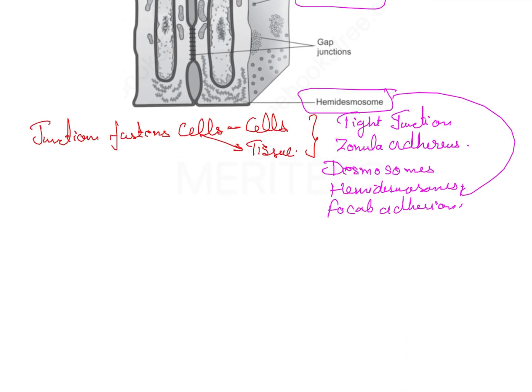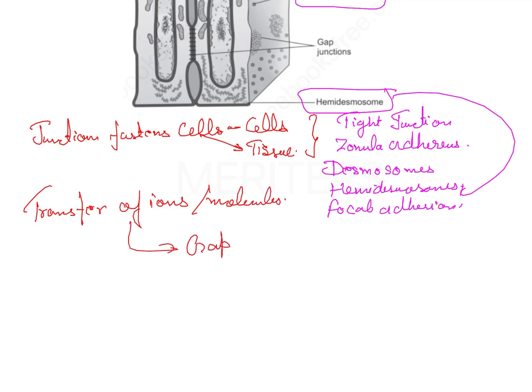Then we have those junctions which permit the transfer of ions and other molecules from one cell to another — these are your gap junctions. The gap junction is that junction which helps in the transfer of ions.